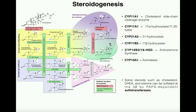Unless we're talking about minor degradation pathways in the liver, aldosterone and cortisol are essentially dead ends of the pathway. These hormones will either act independently at their corresponding receptors throughout the body or be metabolized in the liver.